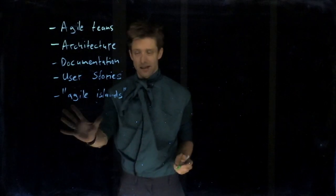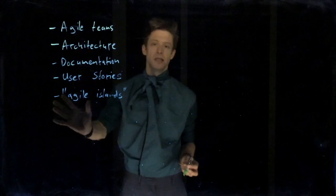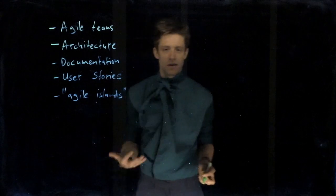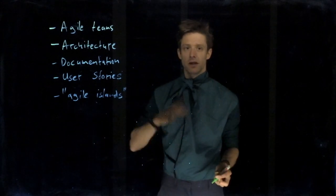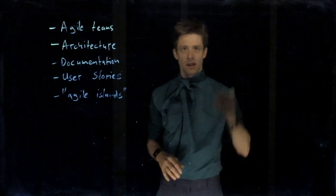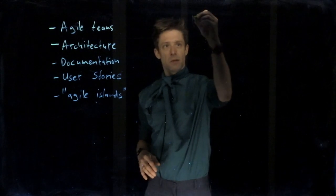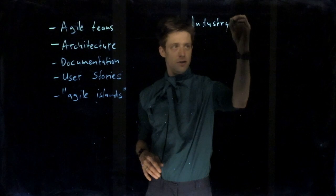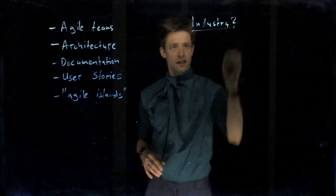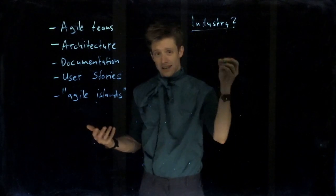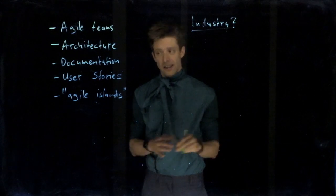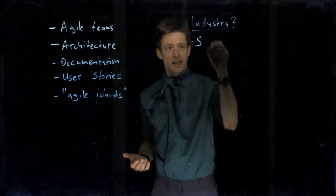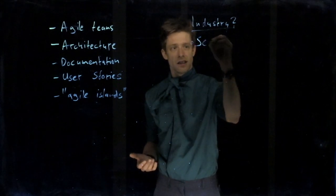So these are things that you need to be aware of. They can be solved — it's not like they break agile — but it's something you need to take into consideration when you decide what process to use. What processes are used in industry? The answer is, as very often in software engineering, it depends. Scrum is definitely an extremely popular process because you can tailor it so well.